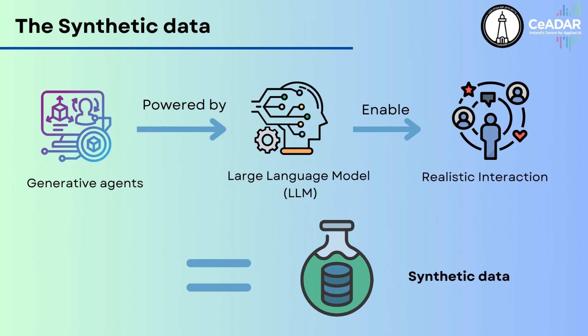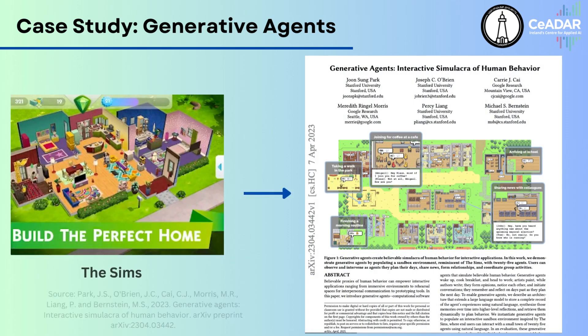As the generative agents go about their virtual lives, they generate a large volume of synthetic data. This data, recorded as detailed logs of the agents' experiences and actions, can be used to train and improve the AIDT. This process of simulating human behavior provides valuable resources for training AI systems and allows for the creation of diverse and comprehensive datasets that accurately reflect the complexity of human behaviors.